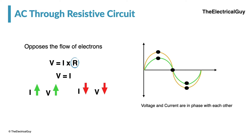We can say that voltage and current are perfectly in phase with each other. When current increases, voltage also increases because of Ohm's law, and when current decreases, the voltage also decreases across the resistor. Hence, voltage and current are perfectly in phase with each other in a resistive circuit — that is how voltage and current behave.